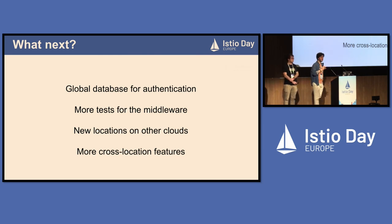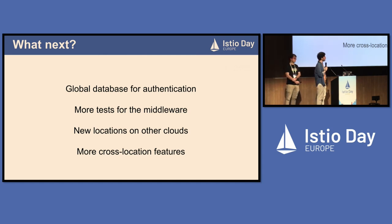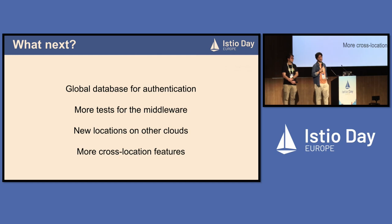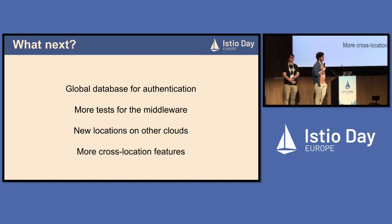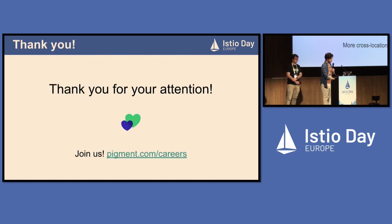Finally, we'd like more cross-location features in the Pigment app itself. Today the main global feature is authentication, but other features make sense to be global, and we're working in collaboration with our backend engineers on this. Our network setup isn't perfect — for instance, services can send HTTP calls to each other via gateways, but they currently can't send gRPC calls, even though the backend mostly communicates via gRPC. Thank you for your attention — we are hiring!